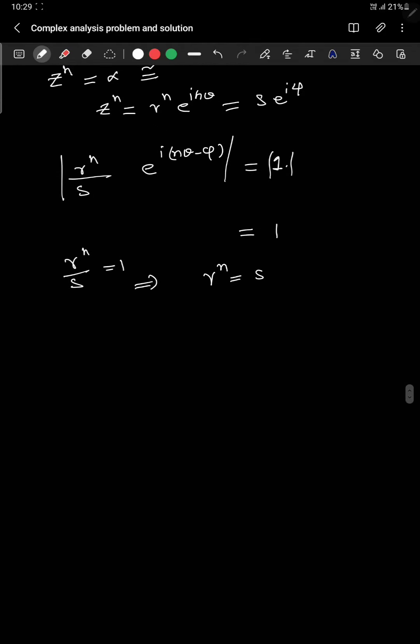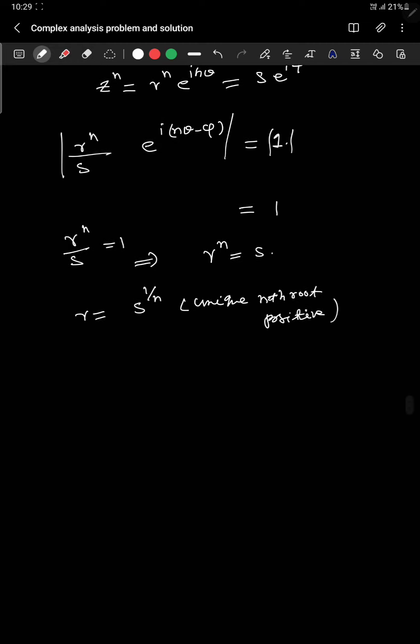And we have some kind of background in real analysis. So that says that the nth root exists uniquely. That means r can be chosen as s^(1/n), unique nth root in the positive sense. So it is coming from real analysis.